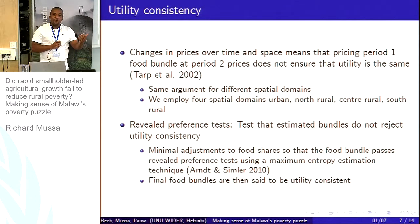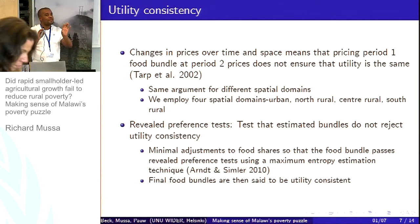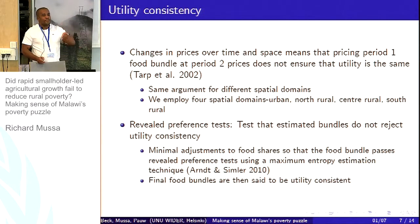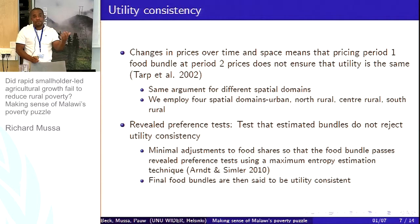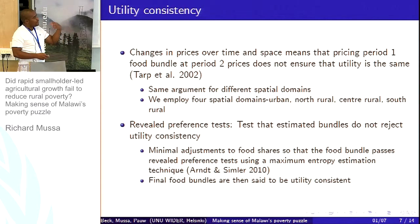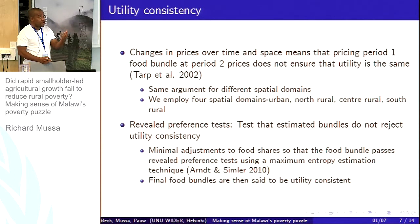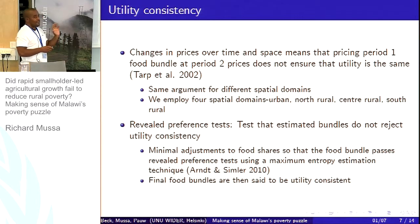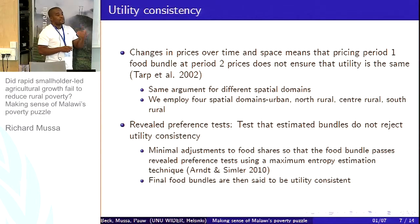Based on the revealed preference tests, we found that for some of the proposed bundles, they failed the tests. Conditional on failing, you must adjust the bundles. Quite a number of them failed the test, so we had to adjust the bundles. After adjusting them, what you end up with are food poverty lines that are utility-consistent. Without going into the full technical details, that is essentially what we did in the paper.